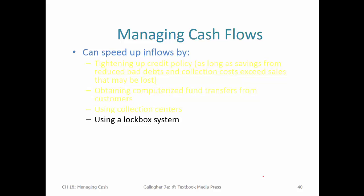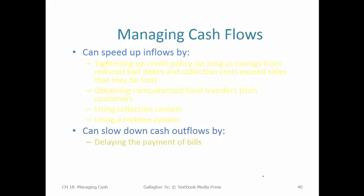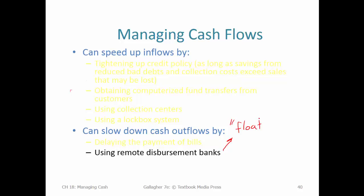Using collection centers and lockbox systems are methods of increasing the efficiency of mailed payments. We can also slow down outflows by delaying payment of bills and using remote disbursement banks — a procedure known as float, or floating your payments. You might remember from the video clip from 'Catch Me If You Can' where the FBI agent was talking about the Federal Reserve districts and how checks in each regional district had that Fed number built into their routing number. Those checks would be sent to that Fed area for processing — this is a map of the 12 banks of the US Federal Reserve.